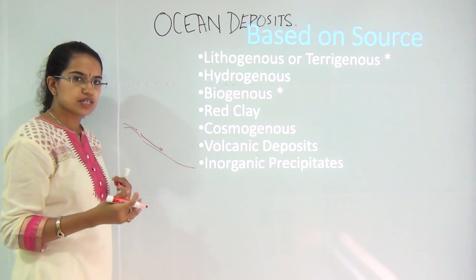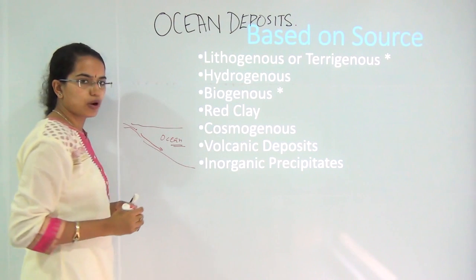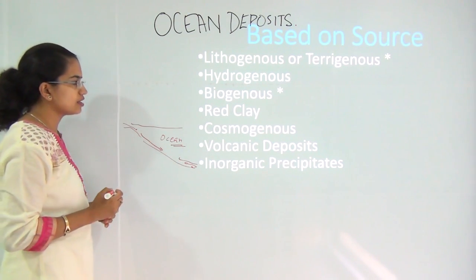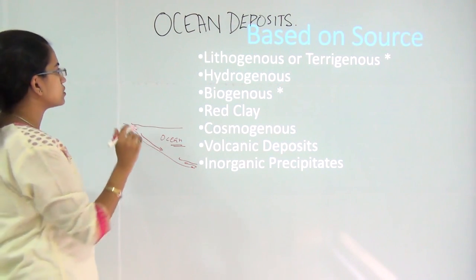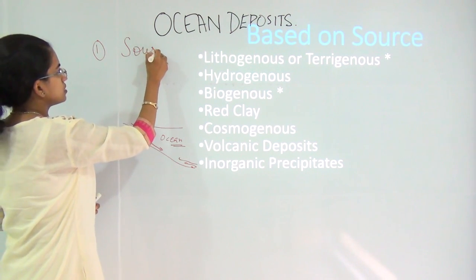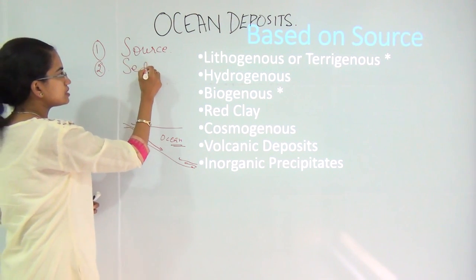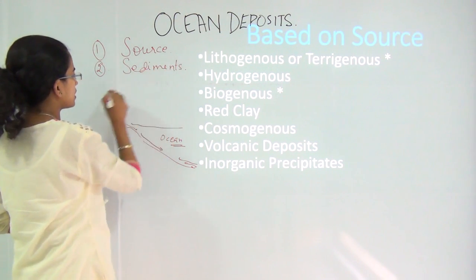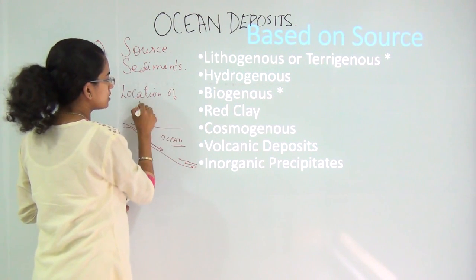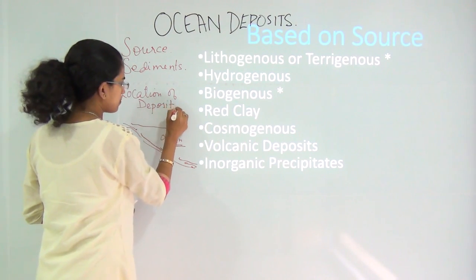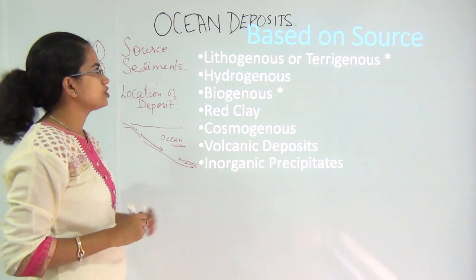Along with sediments, there are various minerals that move into the water and get deposited on the ocean bottom — the ocean bed. We have a classification that is done on three bases: first, based on the source of deposit; next, based on the sediments being deposited; and third, based on the location of deposit, where the deposits are being accumulated. These are the three fundamental bases on which we will discuss ocean deposits.